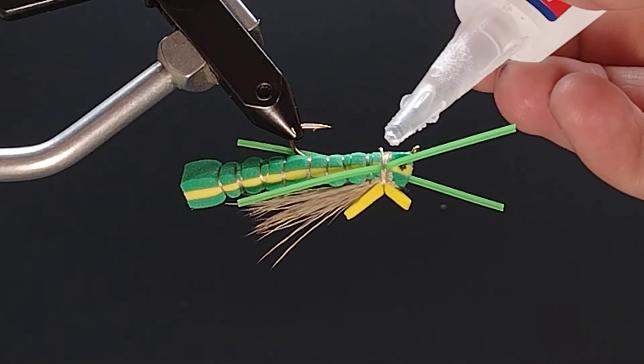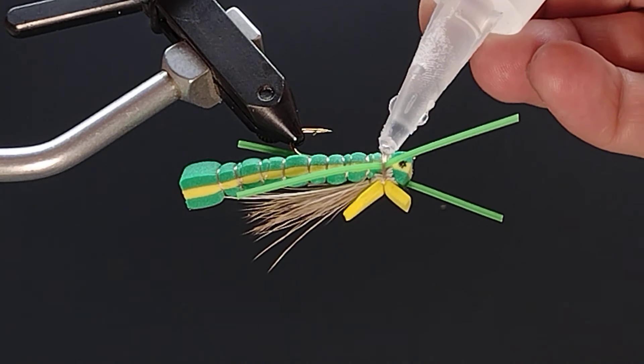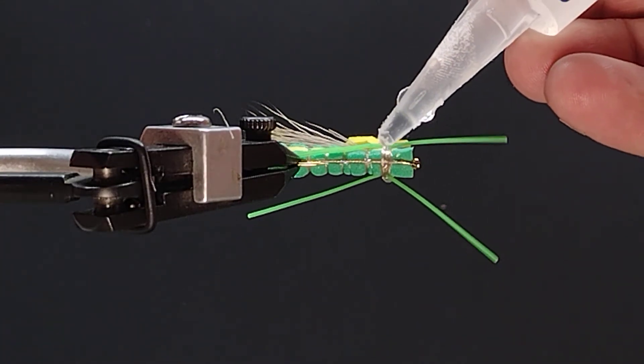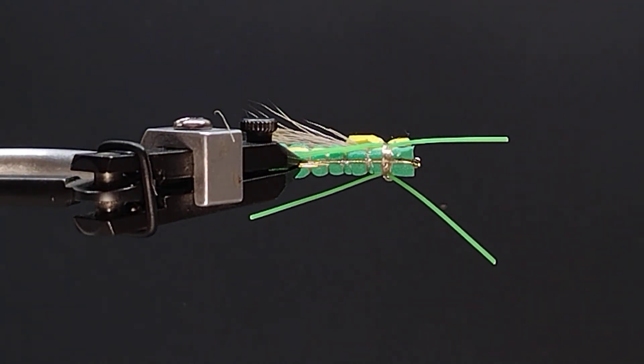I like to put a little bit of super glue back on here. You've got a lot of thread right there. A little drop of super glue doesn't hurt. And that's the grasshopper.